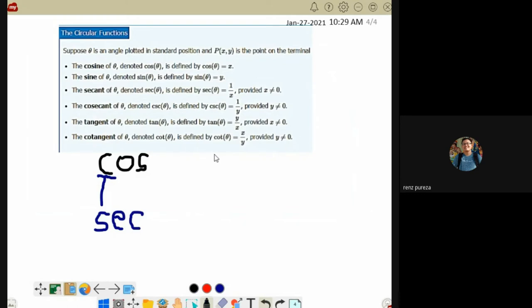When you want the reciprocal of this, its reciprocal starts with S. What starts with S? Secant. On the other hand, when you have sine and want the reciprocal of sine, look at the first letter, S. Now, find the reciprocal that's not S - that is cosecant.